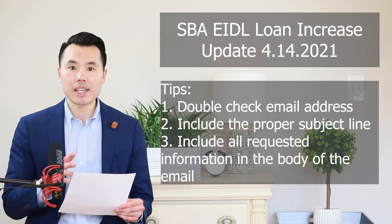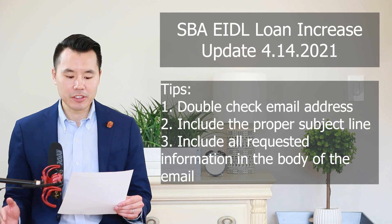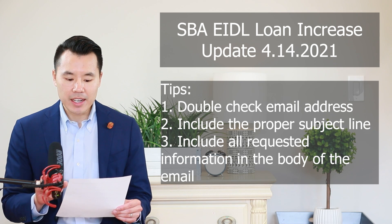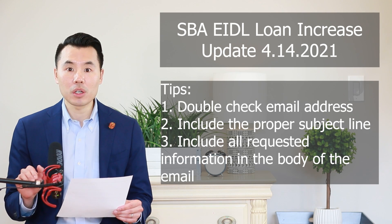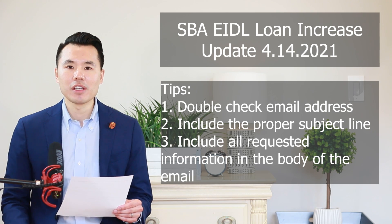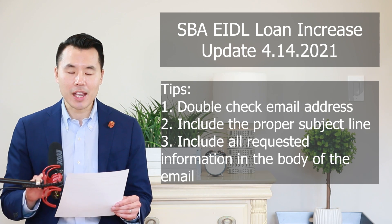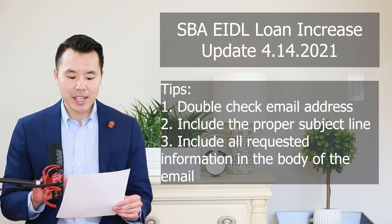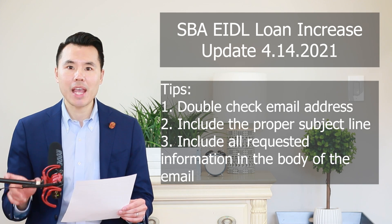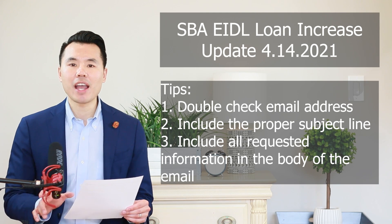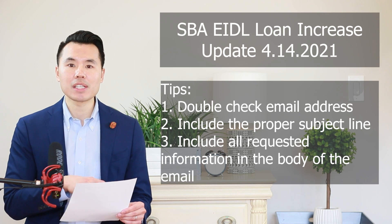That long email should not have any special characters, plus signs, or anything before or after. It should read: COVID EIDL increase requests — requests is plural — requests at SBA.gov. Double check that email address, and then make sure that in the subject line you only include EIDL increase request for the applicable SBA application number. You'll find that application number on the top right corner of your original EIDL closing document.